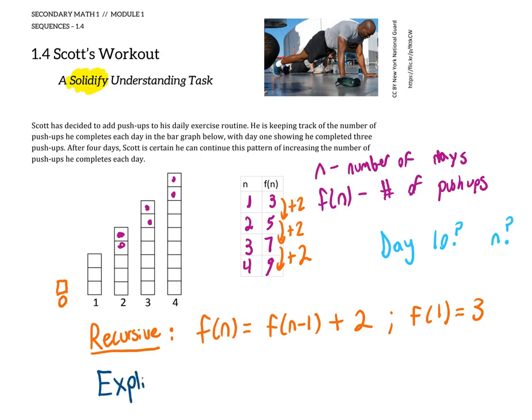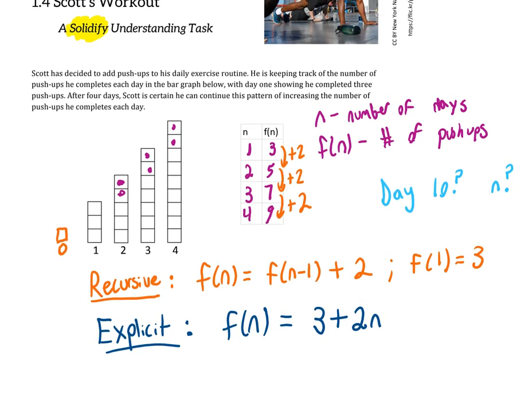To do the explicit formula we can see that we started with three push-ups on the first day. We might be tempted to write 3 + 2n because it's growing by two. But if we test that out, if I plug in n equals four, 3 + 2(4) would be 3 + 8, which is eleven push-ups on the fourth day, which we know is not accurate.